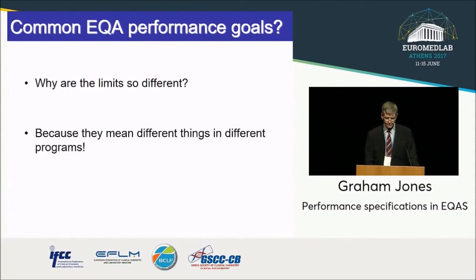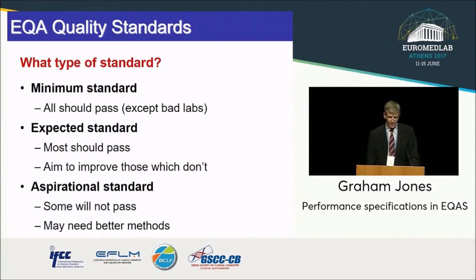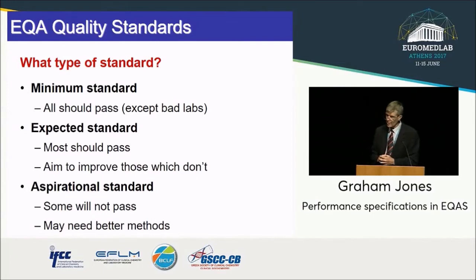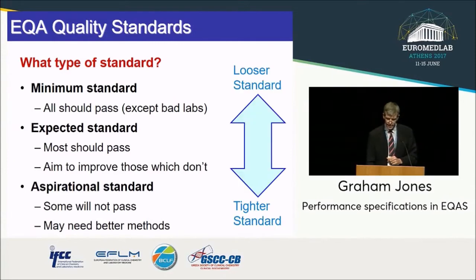Why is this variability? It's because they mean different things. EQA quality standards can be set for different reasons and they have different effects. The EQA organiser might have set a minimum standard — wanting everyone except the really bad labs to pass. At the other end, you might have an aspirational standard that drives improvement toward the best possible goal. And depending on the philosophy adopted, you might have wide standards or tight ones. For those affecting registration, like CLIA in the United States or RiliBÄK in Germany, being outside has regulatory implications, so they tend to be wider.